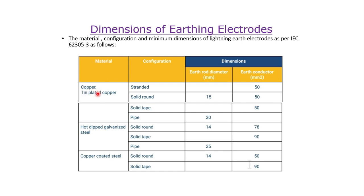For material copper or tin-plated copper: if the configuration is stranded, the earthing conductor size would be 50 square mm. If it is solid round, the earth rod diameter would be 15 mm and the earth conductor is 50 square mm. If it is solid tape, the earth conductor size would also be 50 square mm.